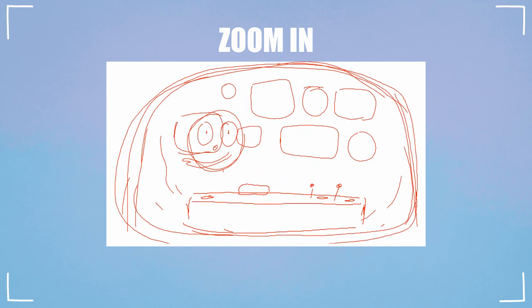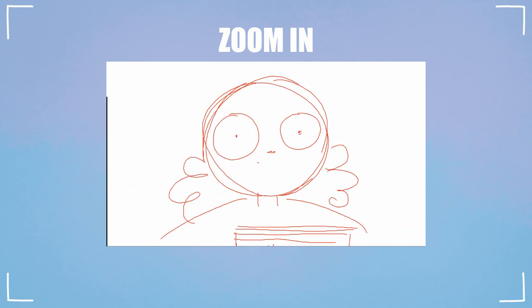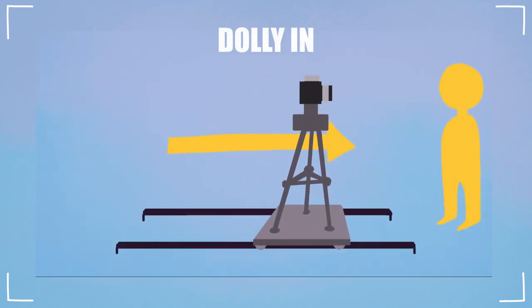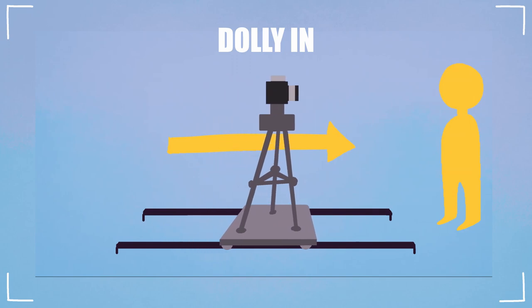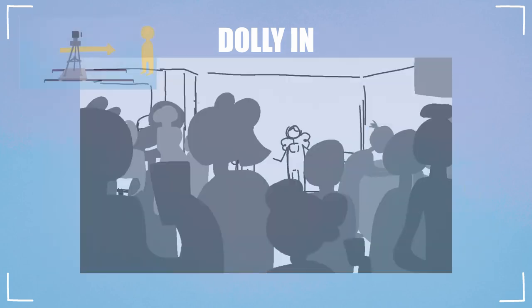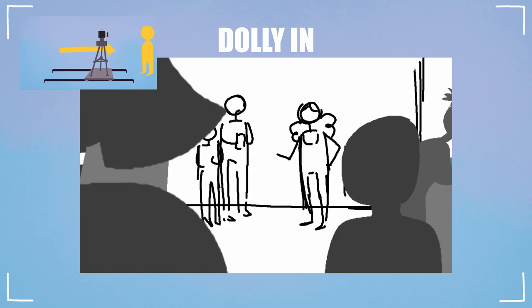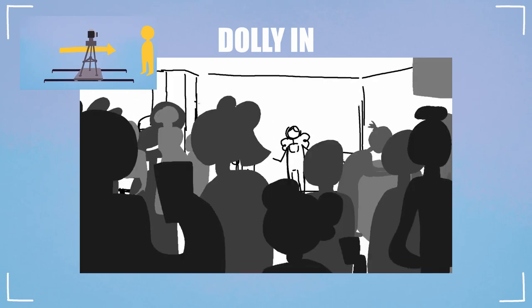If you're working on a serious scene, a very quick zoom-in can make it funny, but it depends on what you're going for, so be careful with this one. Dolly-in: this is a more natural form of the zoom-in, as in live action the camera is placed on a track and moved closer to or further away from a subject. Unlike the zoom-in, the world around the subject moves with the camera.